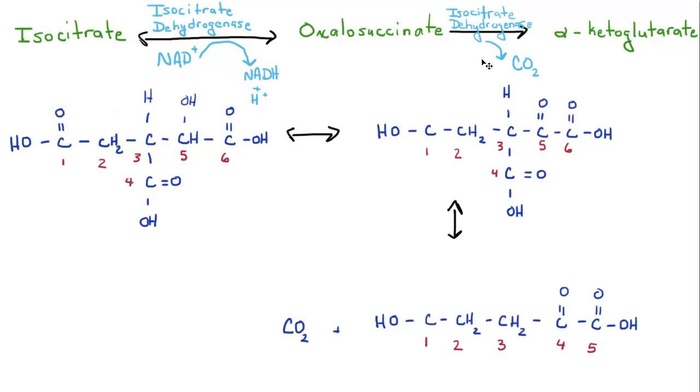And then the next step, this carboxylic acid group right here is going to be kicked off in the form of carbon dioxide. So you're going from a 6-carbon molecule to a 5-carbon molecule with the oxidized alcohol group right here on carbon 4.